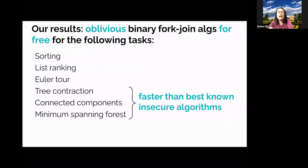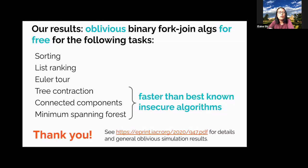We looked at a suite of fundamental parallel tasks including sorting, list ranking, Euler tour, tree contraction, connected components, and minimum spanning forest. For all of these we show how to get obliviousness for free in the binary fork-join model, and for a subset of them our algorithms outperform the best known insecure algorithms. We combine techniques from two previously separate lines of work — ORAM and parallel algorithms — hoping to create a bridge between the two communities.